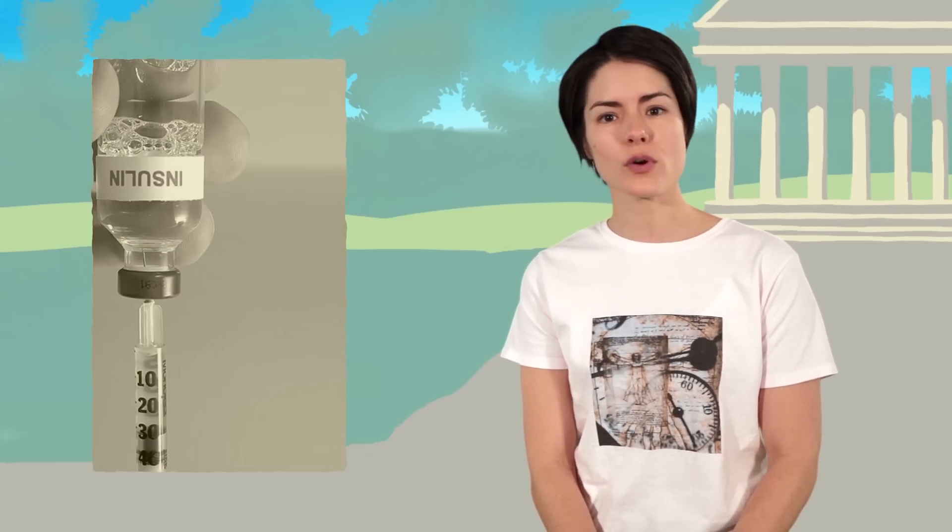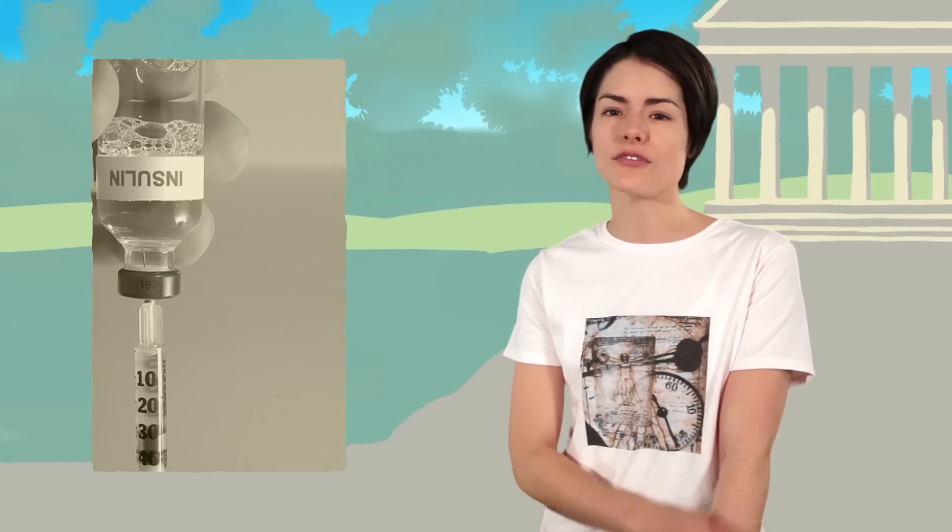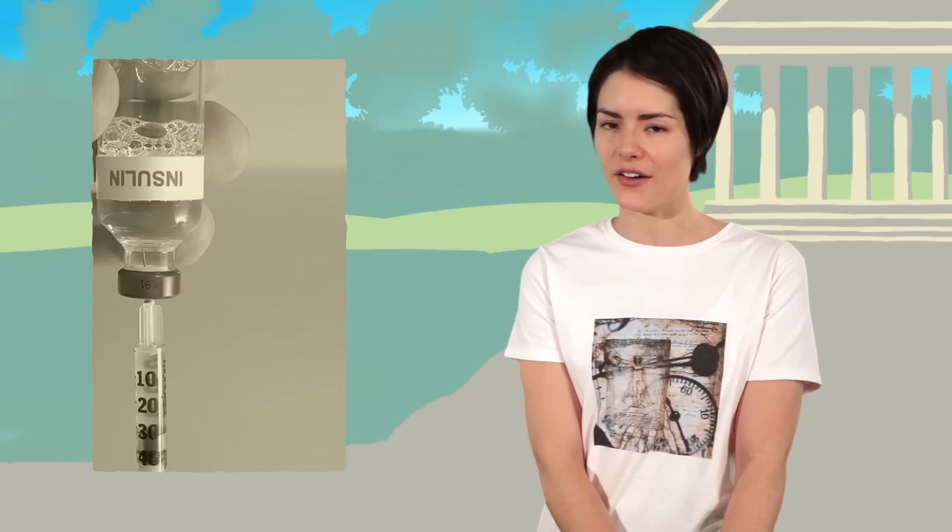Next came the work which would earn Sanger the first of his two Nobel Prizes in chemistry. Sanger joined the lab of Albert Charles Chibnall, who had done some preliminary work on the amino acid composition of insulin. In those days, insulin was one of the few proteins readily available in a purified form, so it was a favorite subject for research by biochemists.